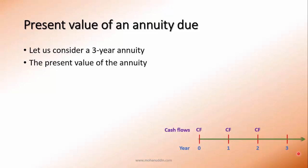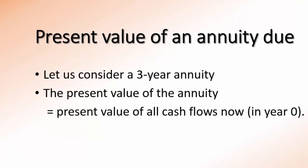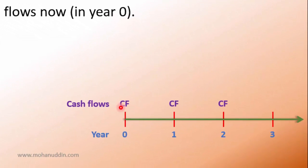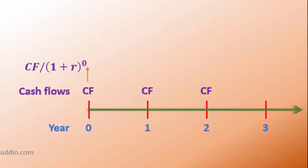The present value of this annuity should be equal to the present value of all the cash flows in year zero. That means the total present value should be calculated at year zero — that means now. Looking at individual cash flows: the first cash flow is already in year zero, so we do not have to do any calculation, but mathematically we can say we have to discount the first cash flow for zero years.